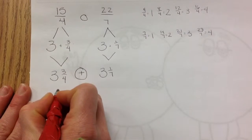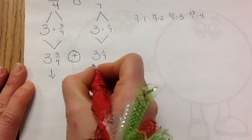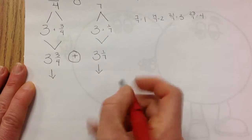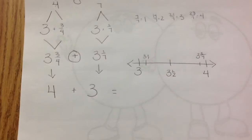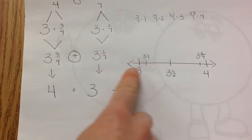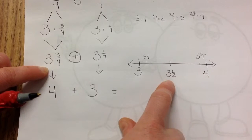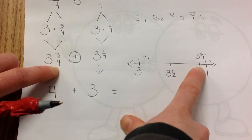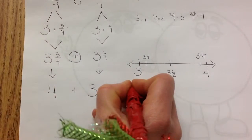I have to round. What would three and three-fourths round to? If you need to draw your number line, go ahead. Pause while you figure out what each rounds to, then add them. I was actually able to use the same number line for both. Three and three-fourths: the whole before is three, the whole after is four, and the middle is three and a half. Three and three-fourths is definitely closer to four, and three and one-seventh is definitely closer to three. So four plus three is seven.